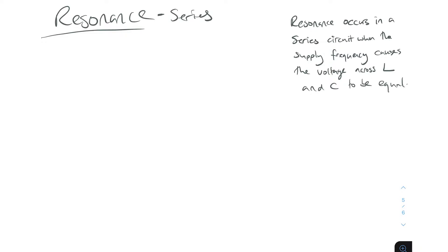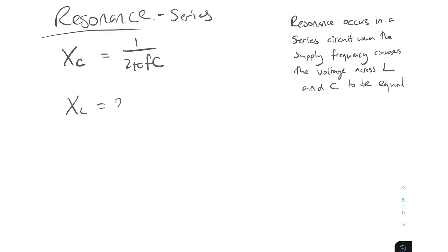Let's look first at XC, which is for a capacitor. The equation for XC is 1 over 2πfC — that's how we find the reactance of a capacitor. And for the reactance of an inductor, we do 2πfL.